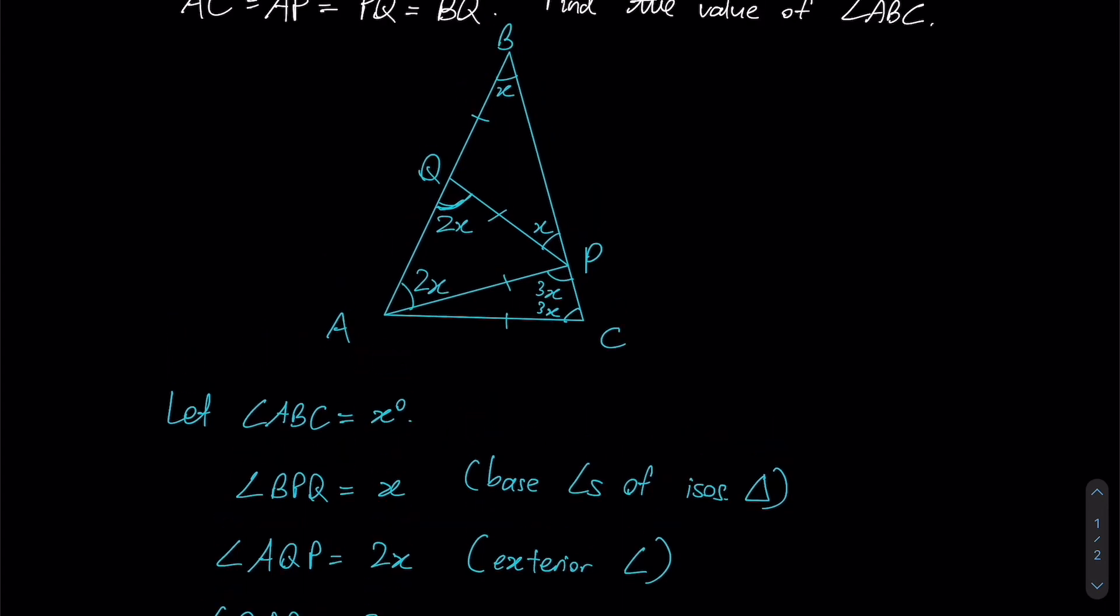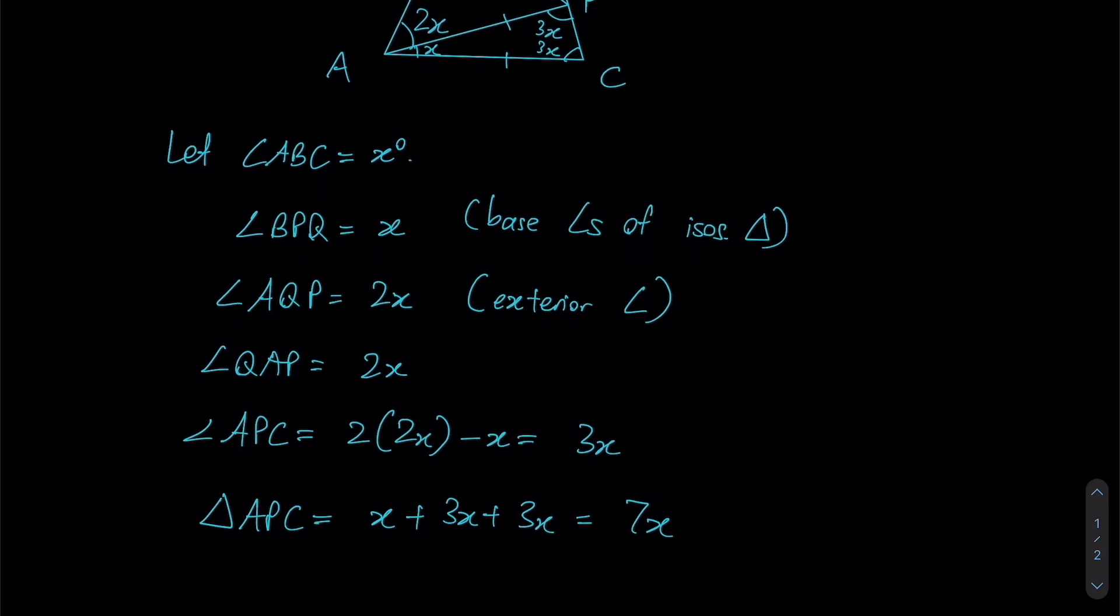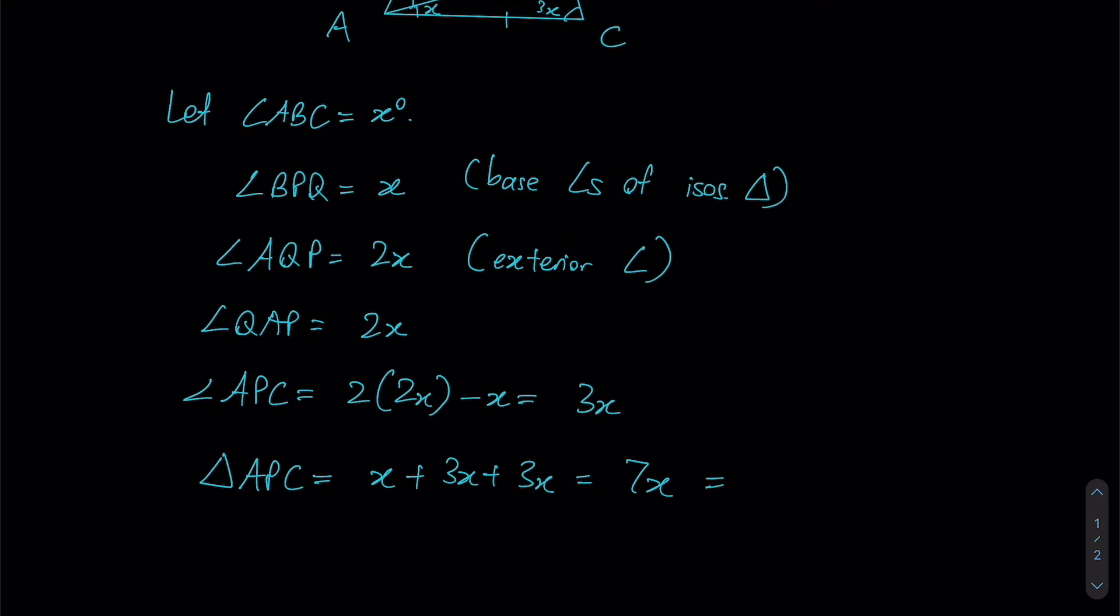Now, overall, ABC itself is the largest isosceles triangle, which means that these two base angles must be the same. Given that this is 3x and this right now currently is 2x, then this small angle here must be x. Considering triangle APC, we can now see that the sum of your angles here is x plus 3x plus 3x, which gives us a total of 7x. As we all know, the sum of the angles within a triangle must be 180 degrees.